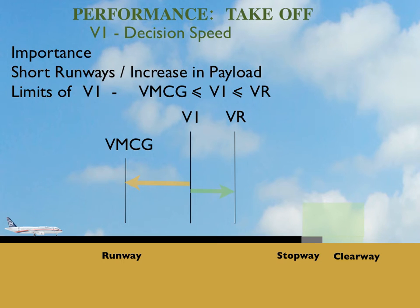Now that you have fairly understood how important V1 is, I want to add two more points. Practically, we would use V1 manipulation — that is reduction of V1 — in case we have to uplift some more marginal payload on short runways. The limits of V1 are: the lowermost limit is VMCG, and the uppermost limit is VR. That is very self-explanatory.